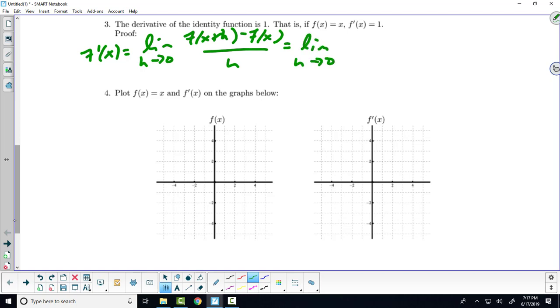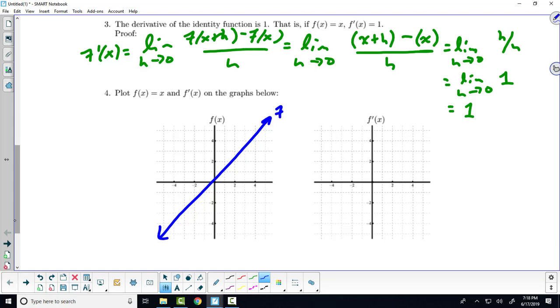That's the limit as h approaches zero. What's the identity function evaluated at x+h? It's itself, x+h, minus what's the identity function evaluated at x? It's x, all over h. This should actually feel a little comforting at this point. You've been doing these over and over again. We're just making some general rules now using this limit definition. We've got the limit as h approaches zero. What does this clean up to be? It cleans up to be h over h, which is the limit as h approaches zero of one, which is one.